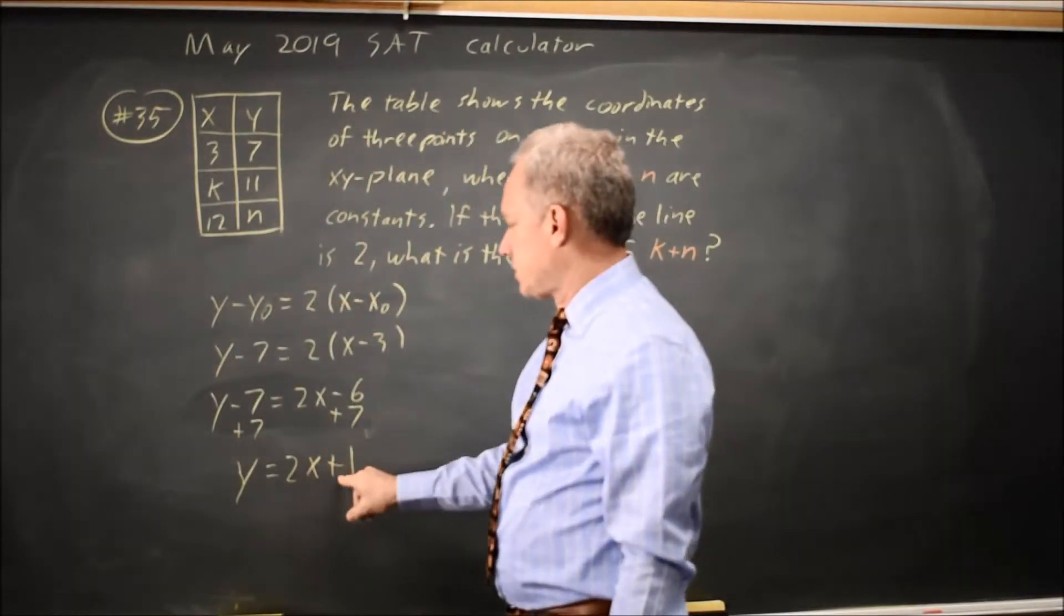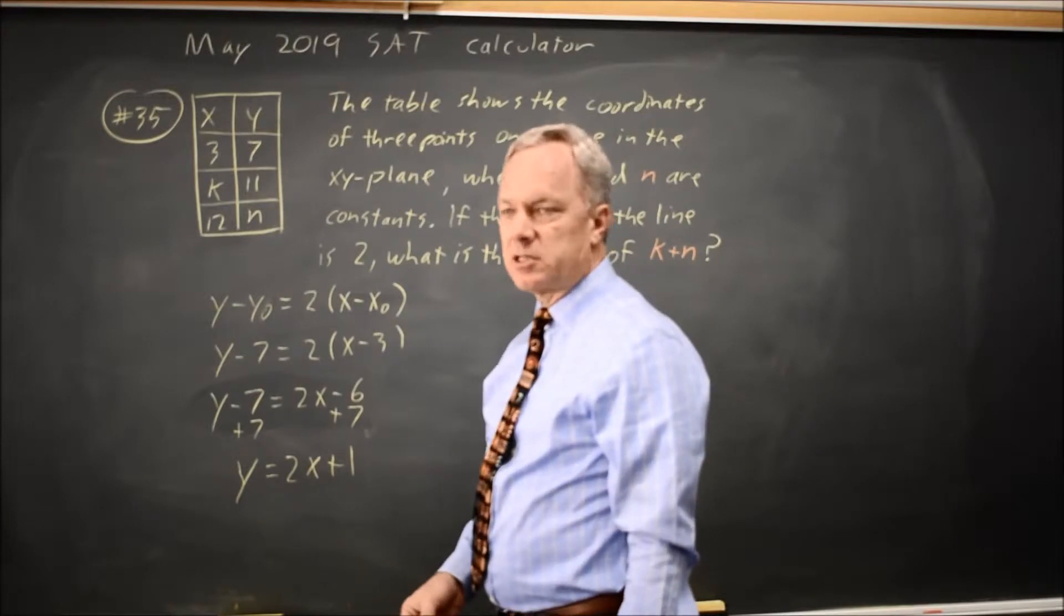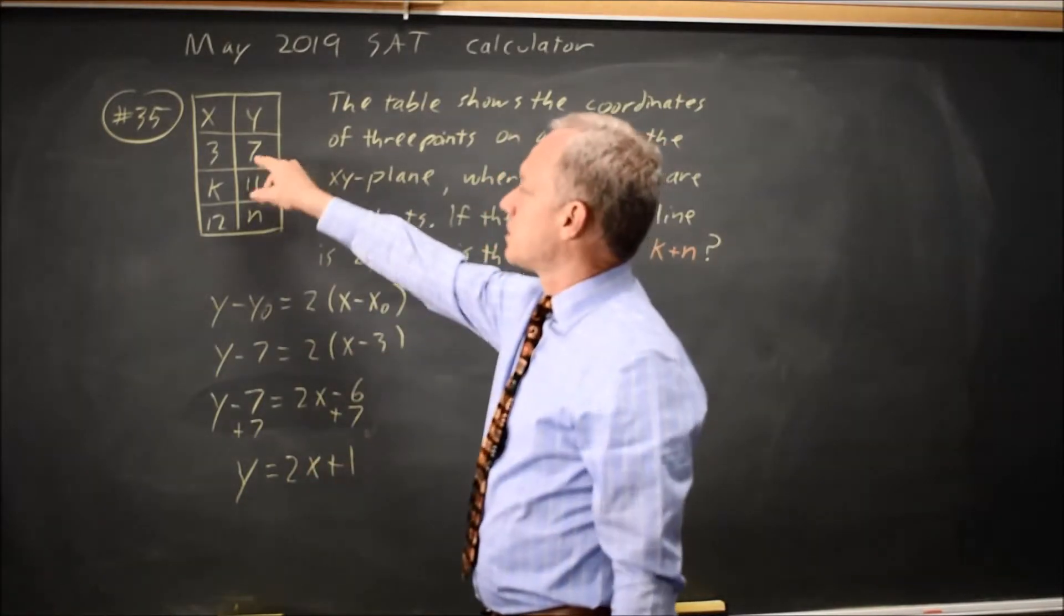If I check, twice 3 is 6, plus 1 is 7, so that does work and it has a slope of 2 passing through this point.